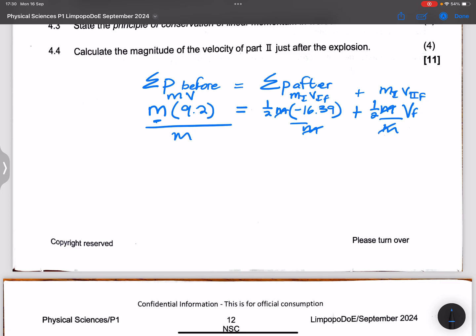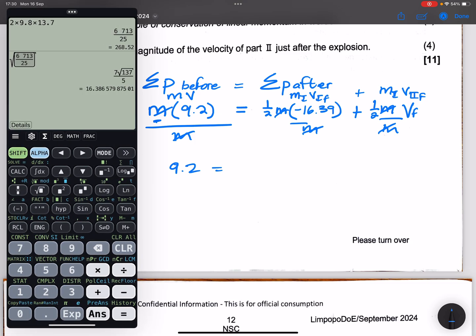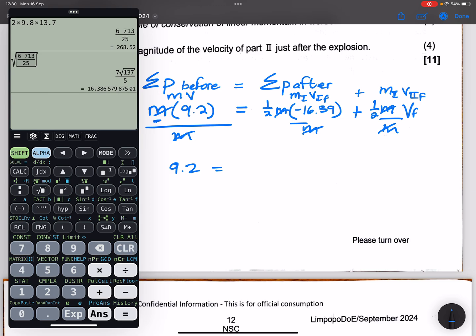You can see that we are actually going to cancel the m out. So we are left with 9.2, which is equal to a half of negative 16.39.